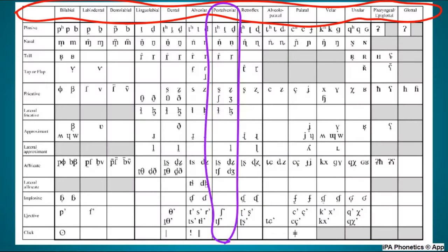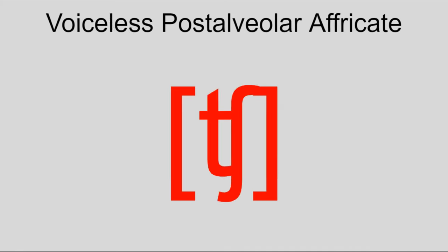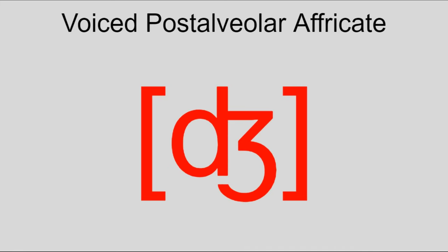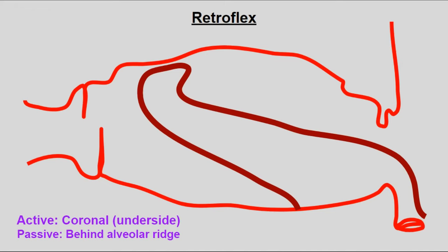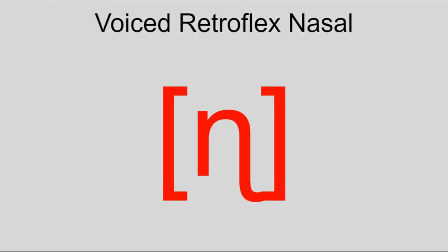Logically, behind alveolar you'll find post-alveolar, which is pretty self-explanatory — the main examples are SH, ZH, CH, and J. Then, kinda going along with this, is retroflex, which is kinda like post-alveolar but the tip of the tongue is curled back so the underside touches the roof of the mouth. These sounds are very common in India and include retroflex D, T, L, N, and SH.